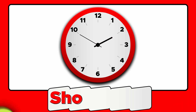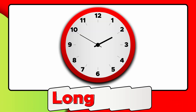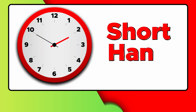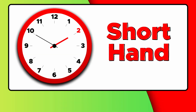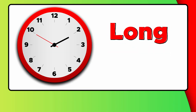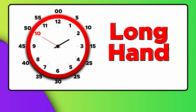The clock has two hands: a short hand and a long hand. The shorter hand tells us what hour it is. The longer hand tells us how many minutes have passed.